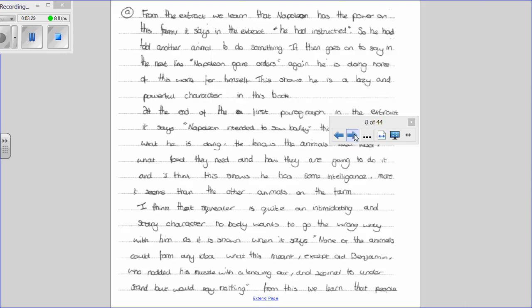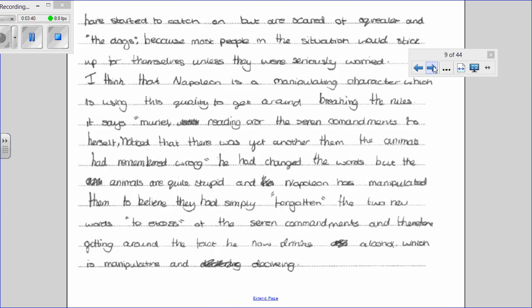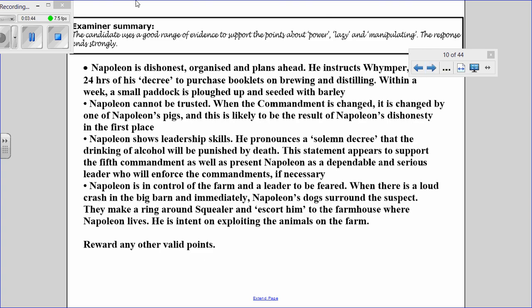If you have a look at this second example, you can see a different candidate attempting the question, and you can compare the two answers. Both of them achieve full marks because they both use a very good range of evidence to support points about Napoleon's character. If you look at this slide here, you will see other things that the candidates could have talked about and other things that you might want to think about from the extract.